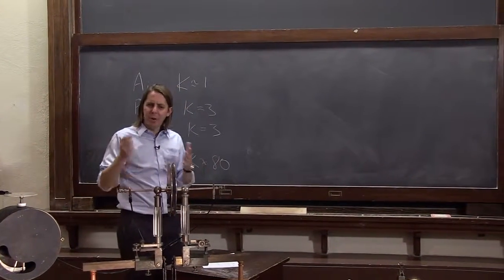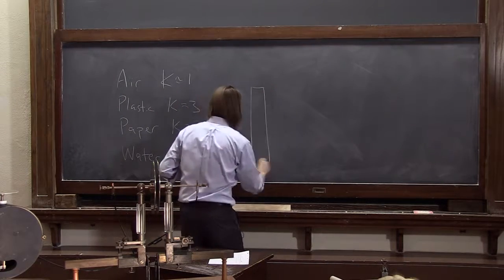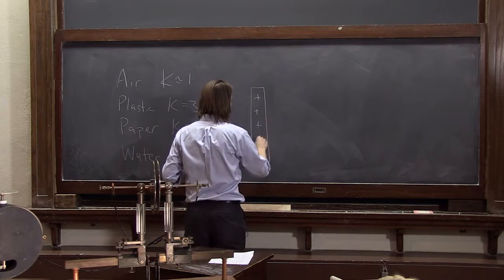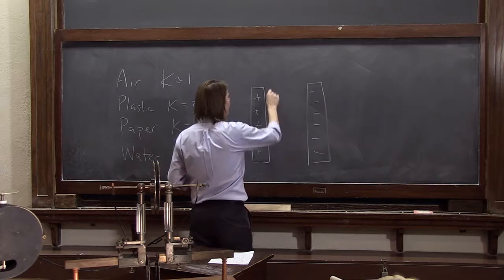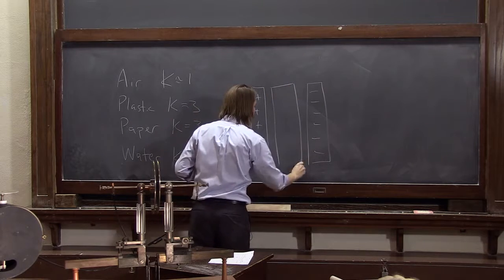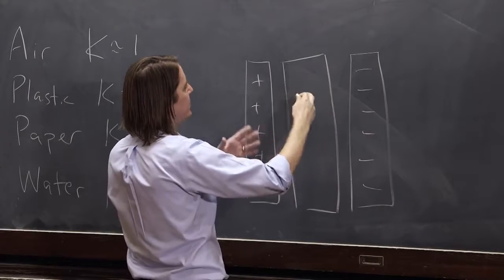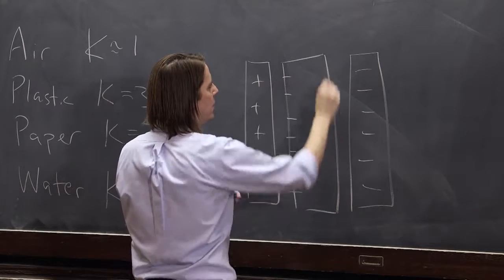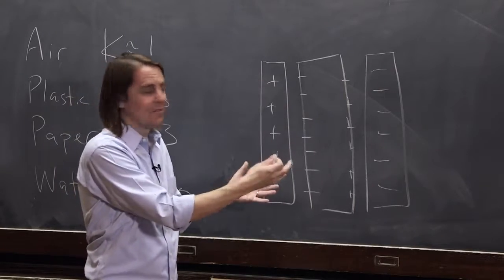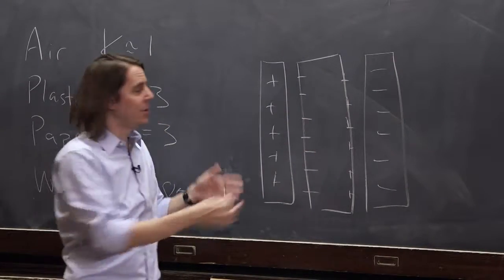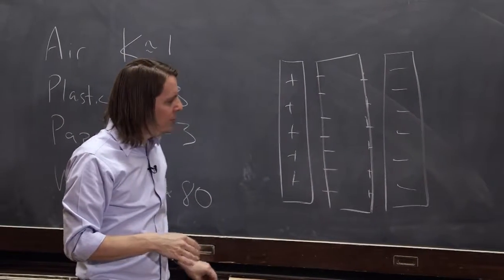Let's look at what's happening at a microscopic scale. If it lowered the voltage, it must have increased the capacitance. When you drop in the insulator and it becomes polarized — the electrons sort of shift — you get a little bit of negative charge on one side and a little positive charge on the other. It's effectively making more capacitance, making more charged planes that are close to each other and closer together than before.